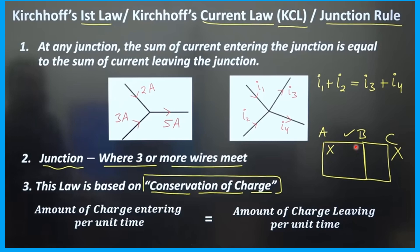Observe point B — three wires meet at a single point, therefore B is a junction. Point C is not a junction because only two wires meet at a single point. In general, a junction is where three or more wires meet at a single point.